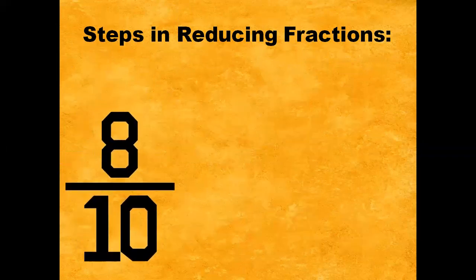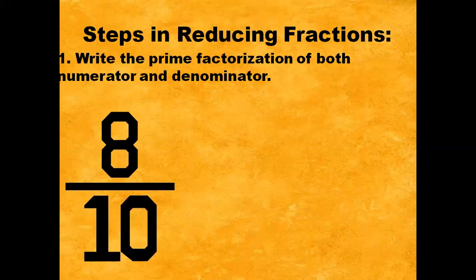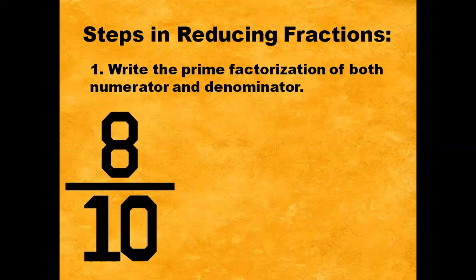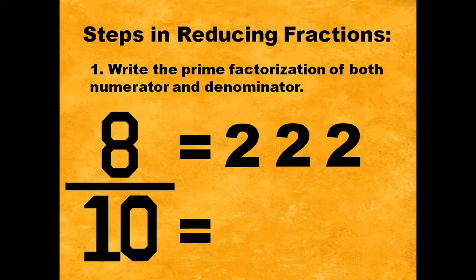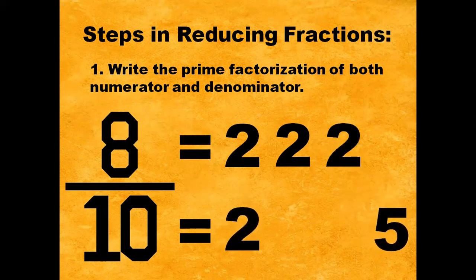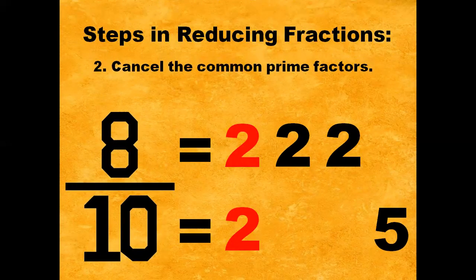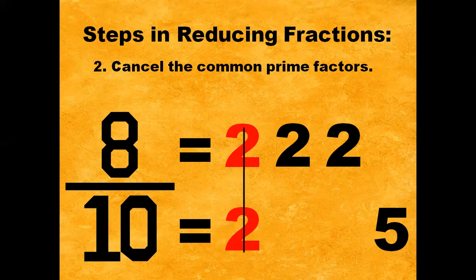Next example. We have 8/10. Step number 1: Write the prime factorization of both numerator and denominator. The prime factors for 8 is 2 times 2 times 2, and for 10 we have 2 times 5. Step number 2: Cancel the common prime factors. The common prime factor of 8/10 is 2. In short, the greatest common factor or GCF is 2.